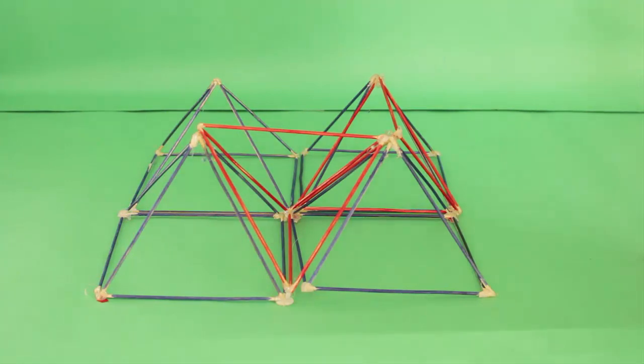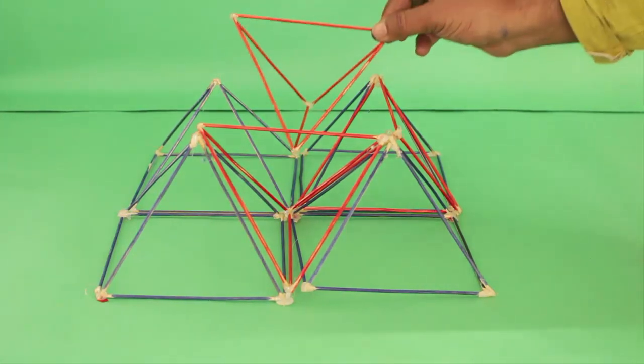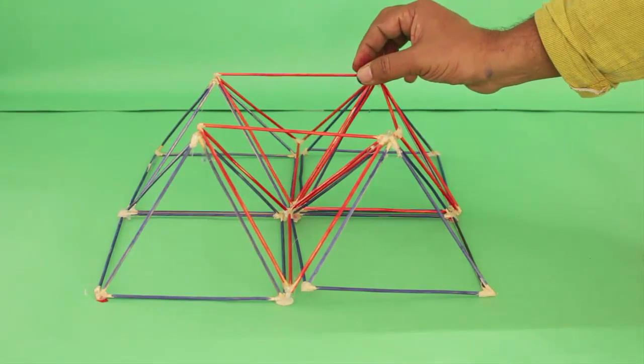Now the base will become a big square. The edge will be double that of the earlier square.